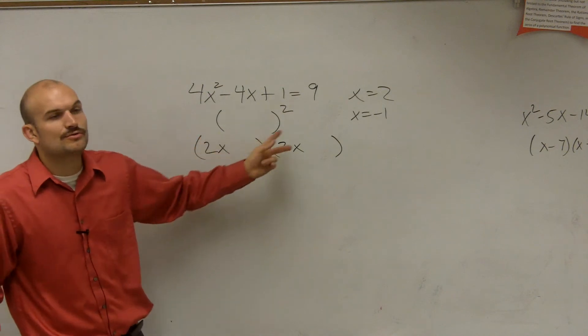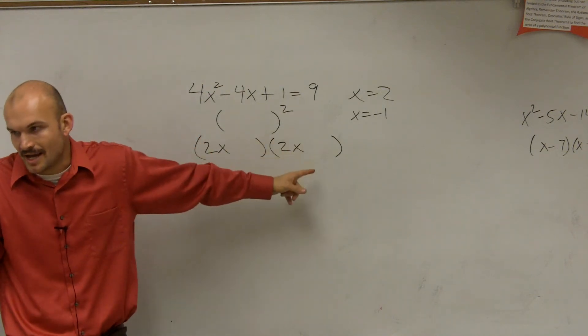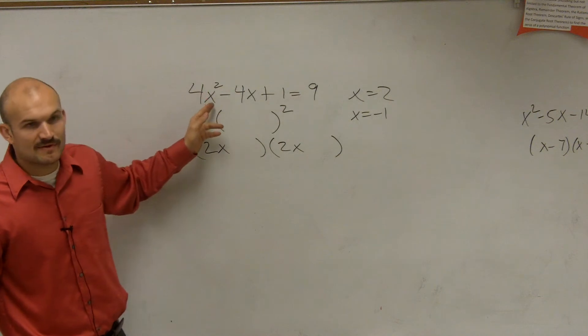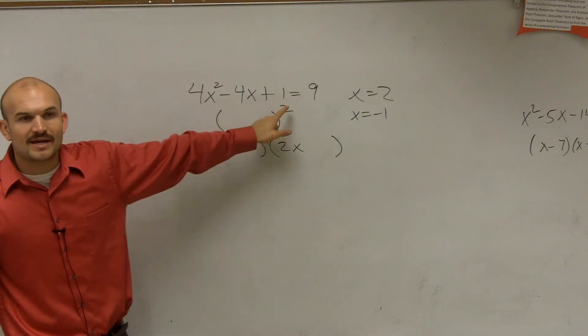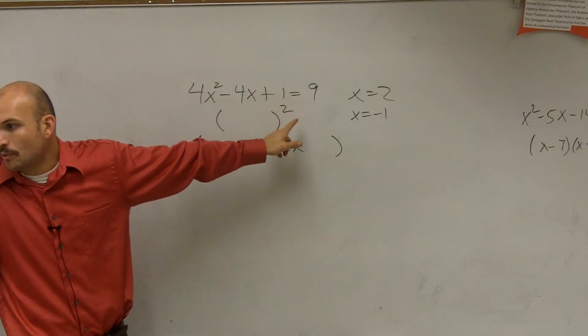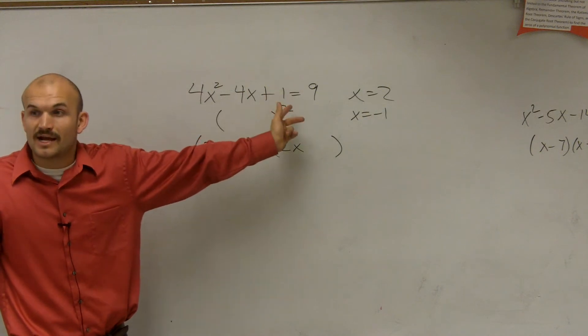So obviously, we have to use 2x and 2x, because you can't use 4x and x. So I have 2x times 2x is going to give me 4x squared. Then I have to have what two numbers multiply to give you 1. It could be 1 and 1, or it could be negative 1 and negative 1.